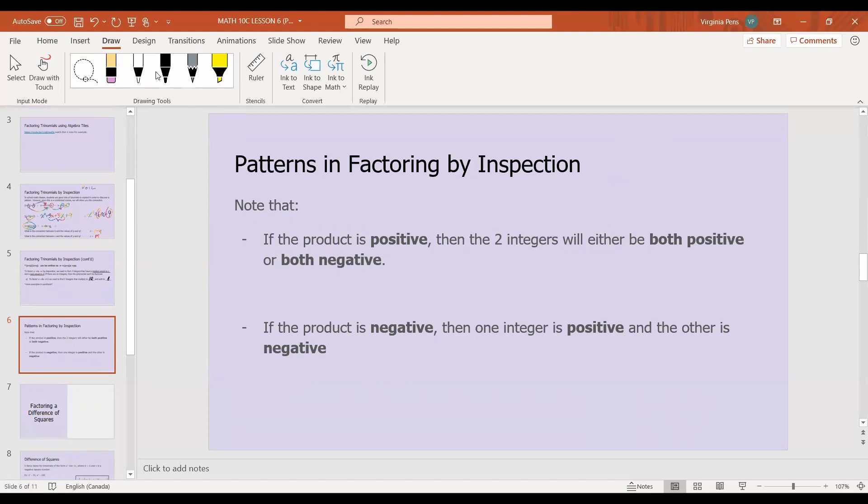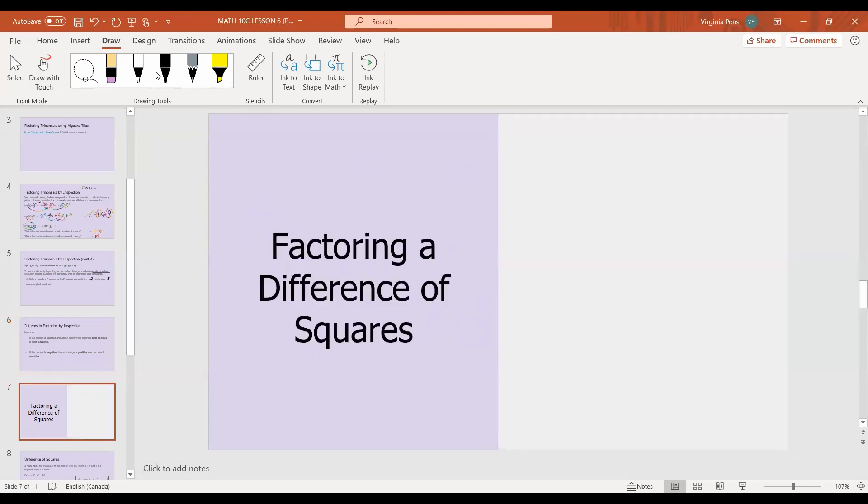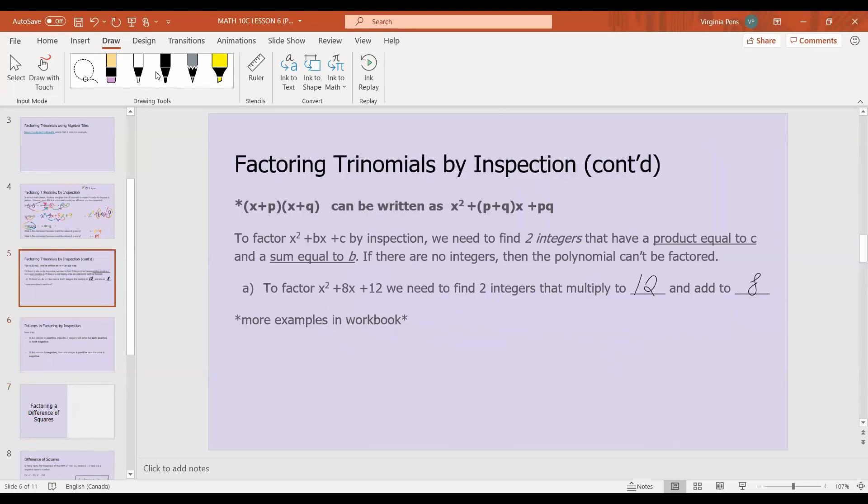Okay, so we're going to kind of look at some more patterns in factoring. So please note that if the product, so the c value in this case, if the product is positive, then the two integers will either be both positive or both negative. Because if you remember from, I think this is grade seven math, if you have a positive times a positive, the result will always be a positive. Or if you have a negative and a negative, the result will, once again, always be positive. But if the product is negative, then you know that one integer is positive, and the other integer is negative. Because a negative times a positive, it's always a negative. Okay, so that's it for factoring trinomials by inspection.